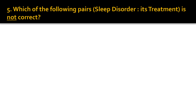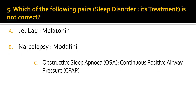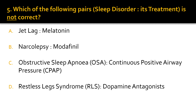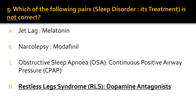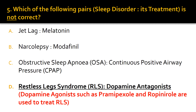Question 5. Which of the following pairs is not correct? Please go through the options and make your selection. The answer is D. D is the pair which is not correct. For treating restless leg syndrome, dopamine agonists such as pramipexole and ropinirole are used.